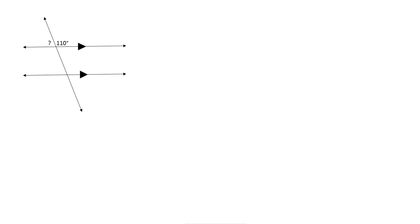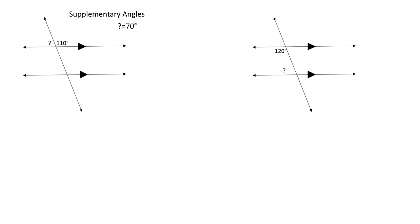Next, you should also recognize this angle relationship. Those 2 angles form 180 degrees — they are supplementary angles. Since they add to 180 degrees, to find the question mark you do 180 minus 110 and get 70 degrees. Last, we have 2 angles that are on the same side of the transversal and on the inside of the parallel lines, so they are same side interior angles. Same side interior angles add to 180 degrees. So to get the question mark, you do 180 minus 120 and get 60 degrees.